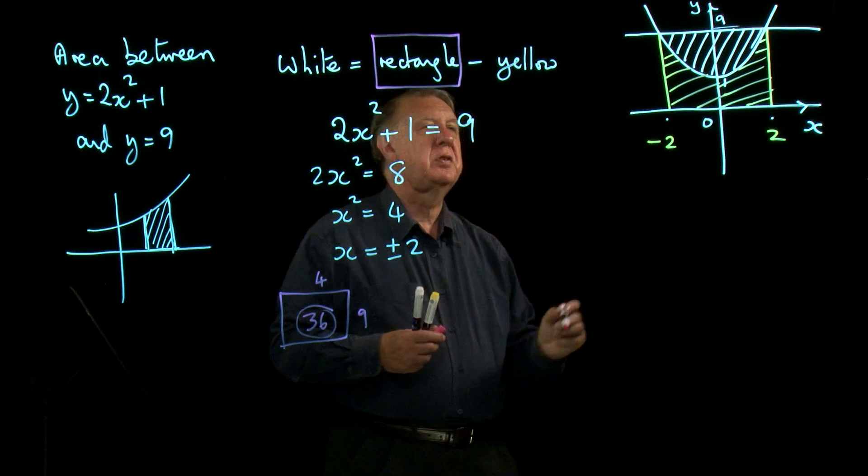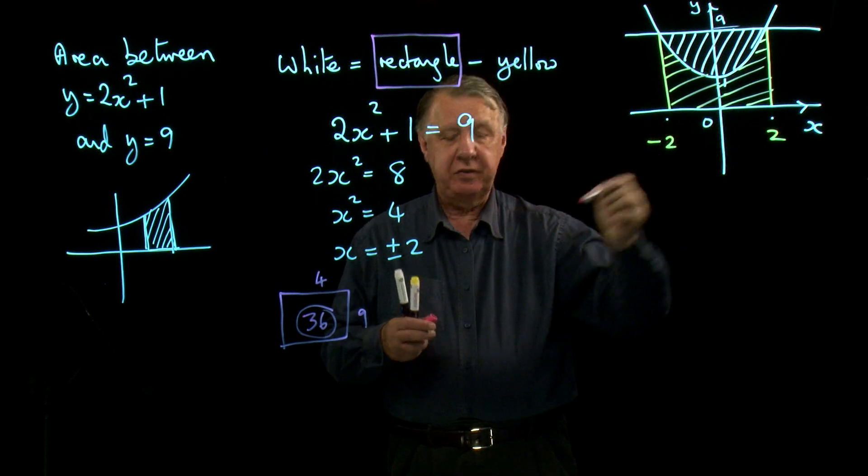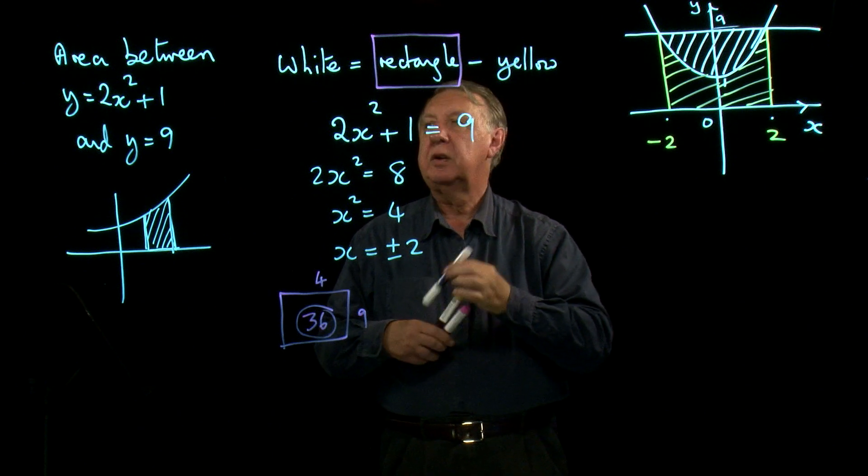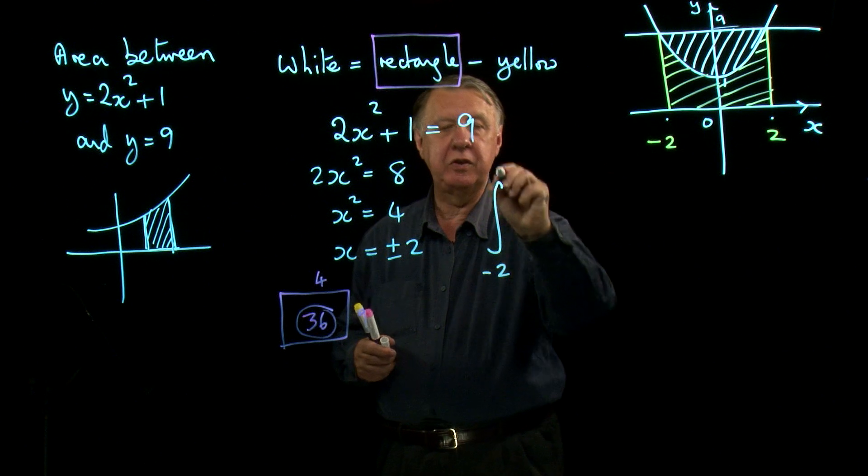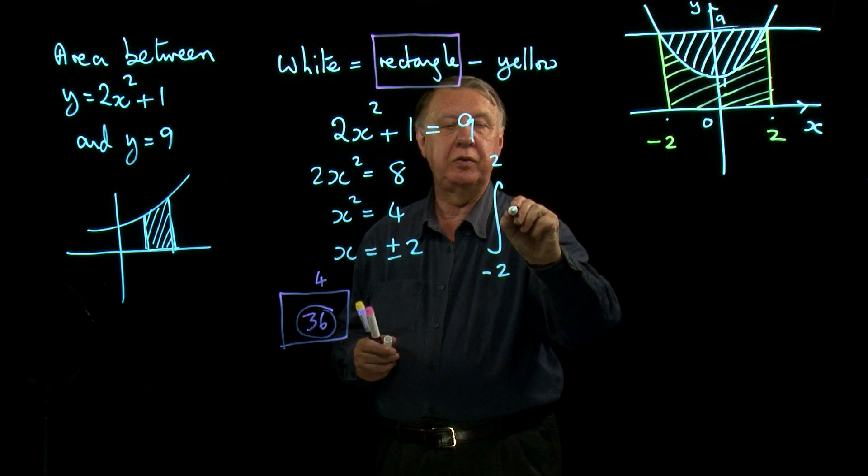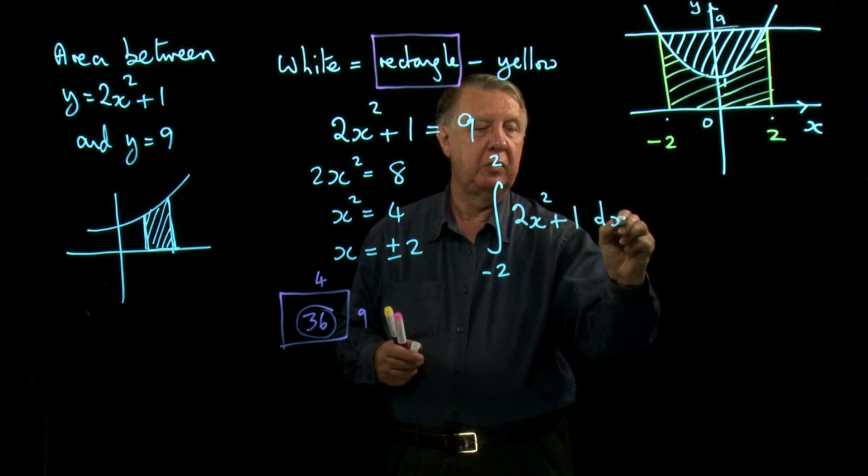Now we want the yellow area. That's okay, isn't it? Because this is underneath the graph. So we can do this in the normal way. So that will be the integral from negative 2 to 2 of 2x squared plus 1 dx.